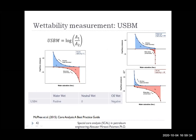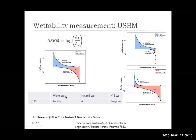Another standard technique for describing wettability is USBM — the abbreviation for United States Bureau of Mines. This technique uses forced displacement capillary pressures. It can be calculated as the logarithm of A1 over A2, where A1 is the area under the oil drainage curve and A2 is the area under the brine drive curve. Water-wet samples have a positive index, neutral-wet gives an index of zero, and oil-wet samples have a negative USBM index.